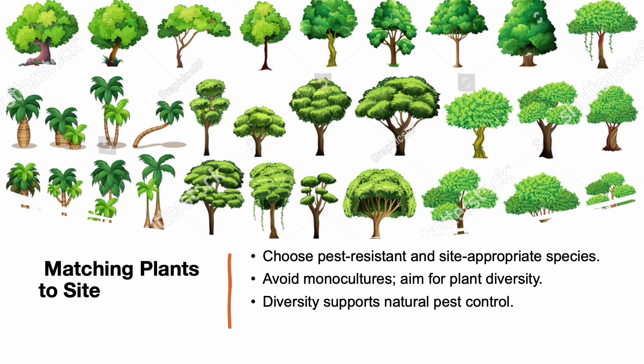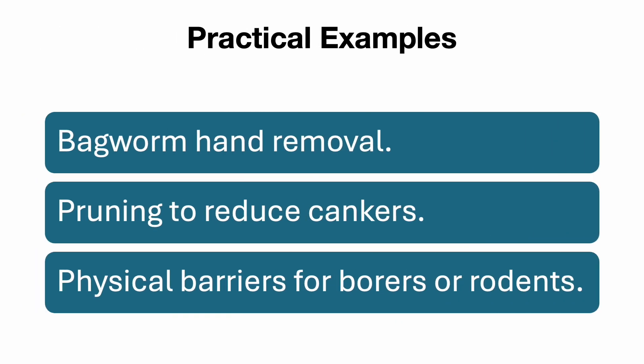Cultural controls involve thoughtful choices like planting the right species, maintaining healthy soil, and mulching properly. Mechanical controls include handpicking pests or using barriers to keep them off plants. Diverse plantings help support natural pest control and reduce risk. Hands-on mechanical methods include removing bagworms by hand, pruning infected limbs to stop cankers from spreading, or installing trunk guards to block borers or rodents. These are low-cost strategies that fit well into any IPM framework.